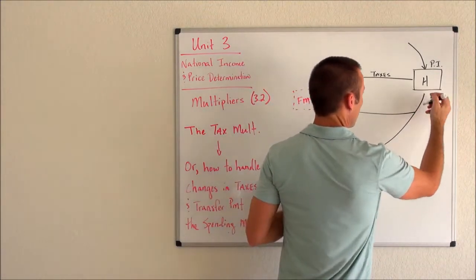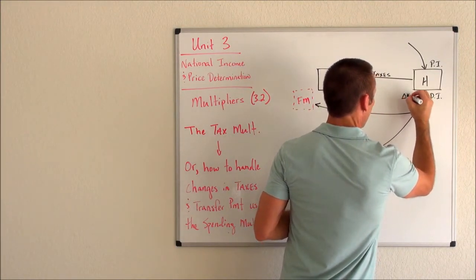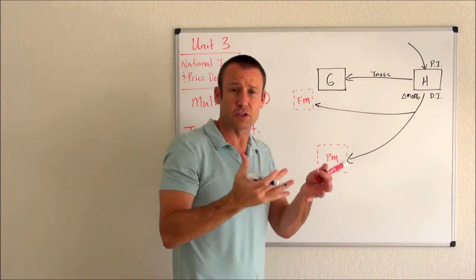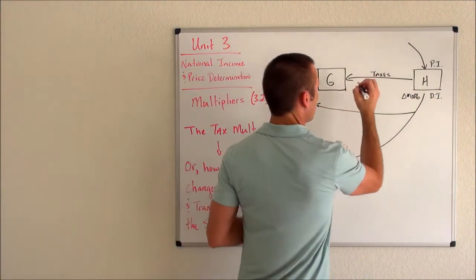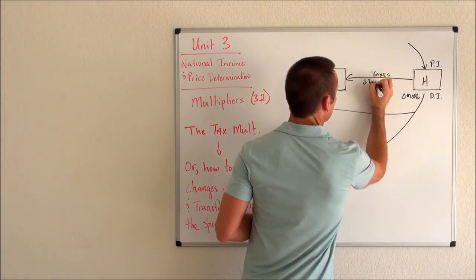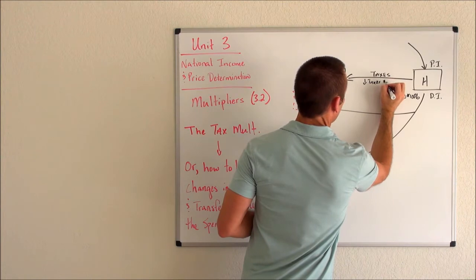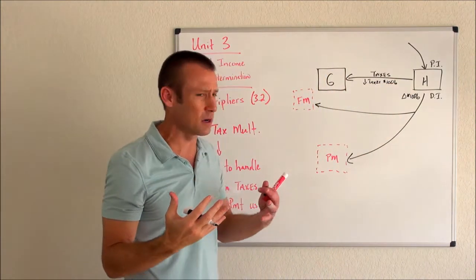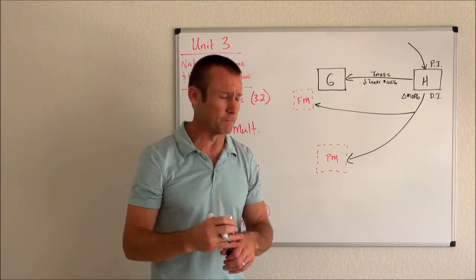Reducing taxes increases disposable income by the amount that taxes are reduced. Let's imagine that we reduce taxes by $100 billion — that would mean $100 billion more of personal income flows into disposable income. So disposable income is going to change by $100 billion in a positive direction. We decreased taxes by $100 billion, so disposable income goes up by that full $100 billion.